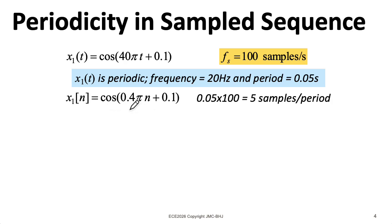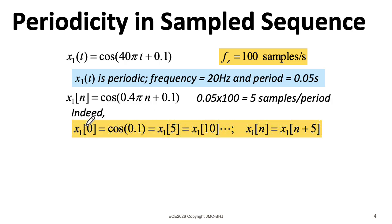If I think about the discrete time sequence, x of 0, I plug in 0 for n, this is 0, and I wind up with 0.1. What if I plug in 5? Let's see, 0.4π times 5 would be 2π. And remember, I can add or subtract multiples of 2π and a cosine, and I get the same thing. So it's the same thing as x[5] or x[10], etc. So x[n] is periodic with a period of five samples.